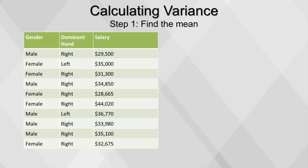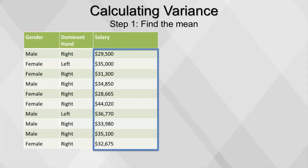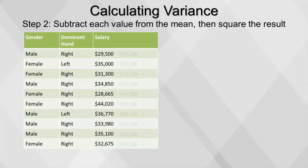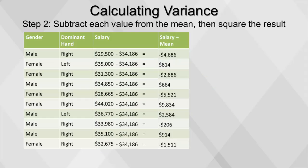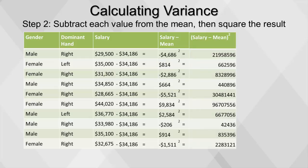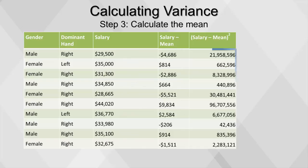To find the variance, we first calculate the mean, or average. Then we subtract the mean from each value and square the result. By squaring the differences, we remove the possibility of negative values cancelling out the positive values. Next, find the average of the squared differences.